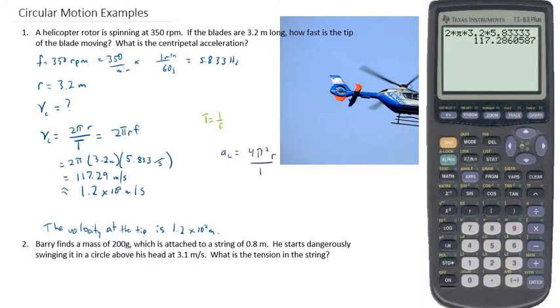4 pi squared times r divided by t, the period, squared. Again, with the period on the bottom, I can switch it with frequency on top. So I'm going to turn this into 4 pi squared r f squared. And then we'll solve that one. So 4 pi squared times 3.2 meters squared times 5.833 per second all squared.